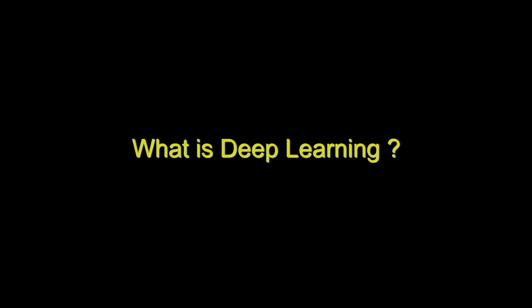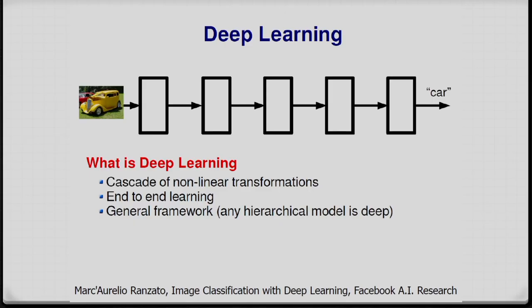The first question is: what is deep learning? Considering the problem of image recognition, you can see one input image. Deep learning is nothing but a cascade of non-linear transformations. It is important to extract important information from the input data — in this case, we are considering the image. We can extract all the important information from the input image by considering this cascade of non-linear transformations.